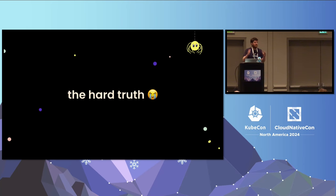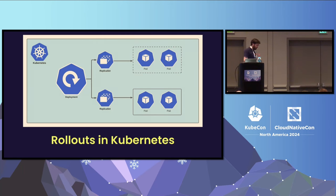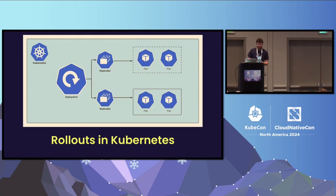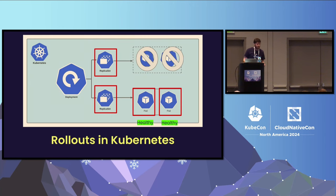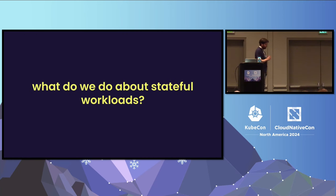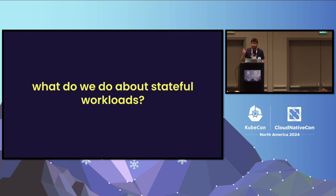We're now looking at the challenges teams face when trying to fully adopt GitOps. GitOps and Kubernetes are super effective at managing stateless resources like application containers. To deploy a new version, you update the deployment object, Kubernetes spins up a new replica set, new pods, runs health checks, and destroys the old environment. But what do we do about stateful workloads like our database, which has a schema related to our application?